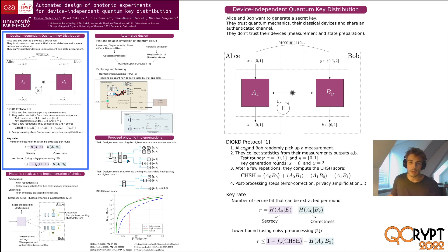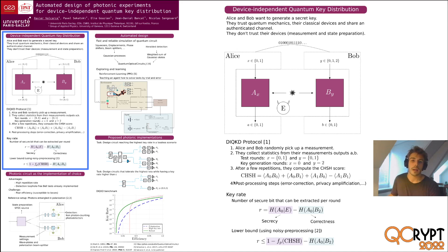The protocol is relatively simple. We start with Alice and Bob picking a setting — 0 or 1 for Alice, 0, 1, or 2 for Bob — and they will then perform their measurements. So if Alice picks 0, she will perform A0, and so on. They collect some outcomes, A for Alice and B for Bob. These constitute some statistics, and from these statistics we can compute the CHSH score. It is simply a linear combination between correlators. After that, there will be some post-processing steps: error correction, privacy amplification, and so on.